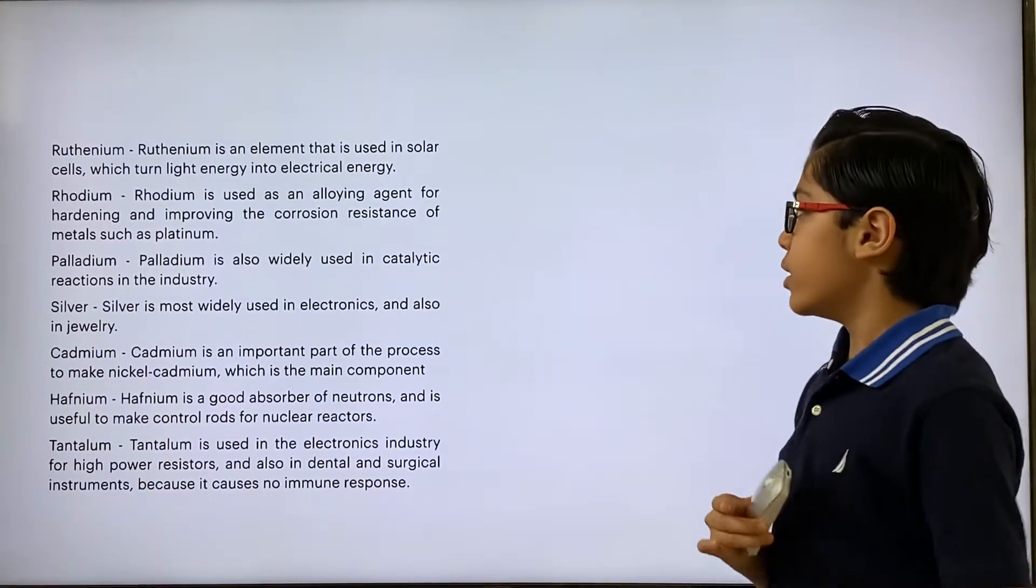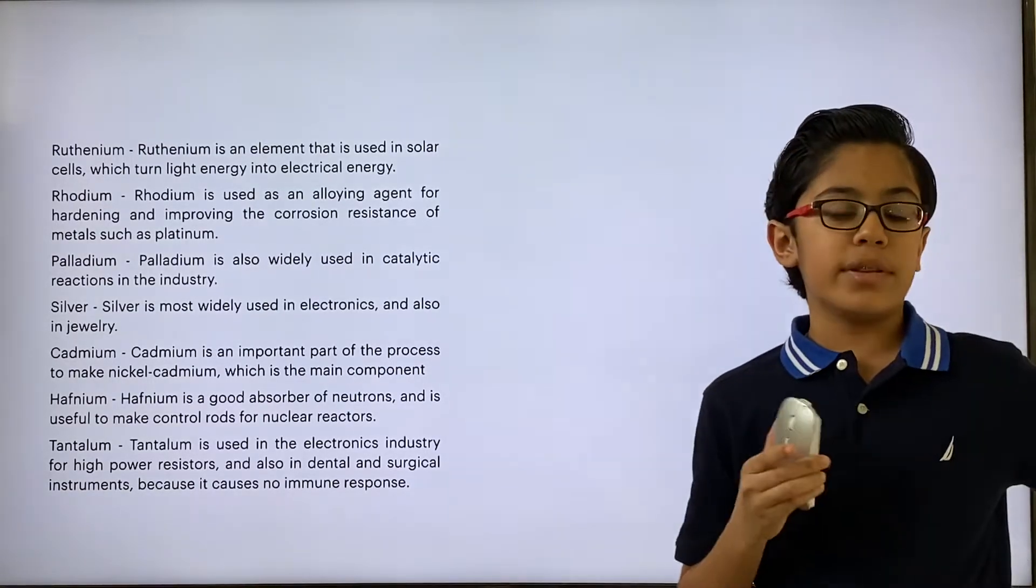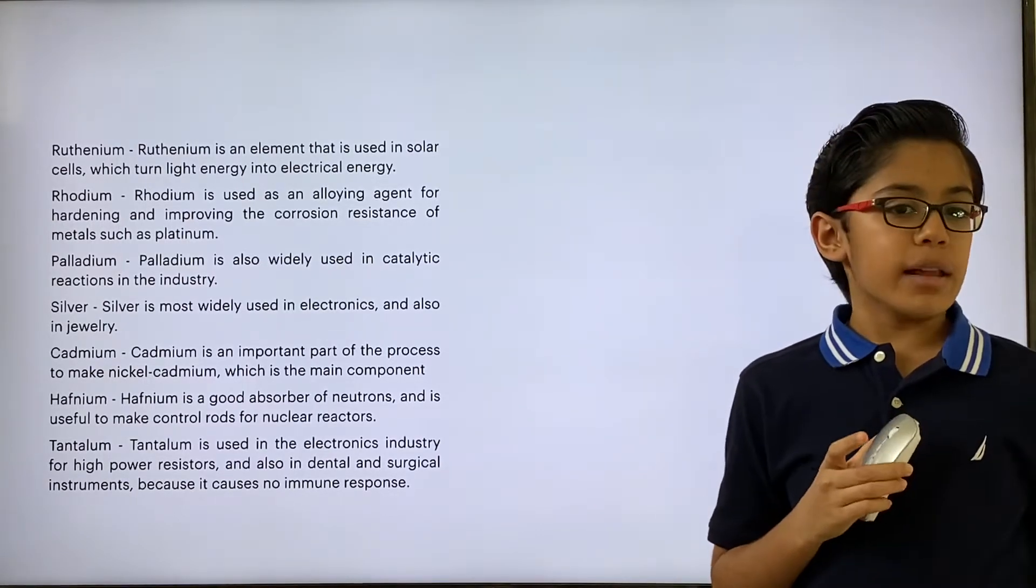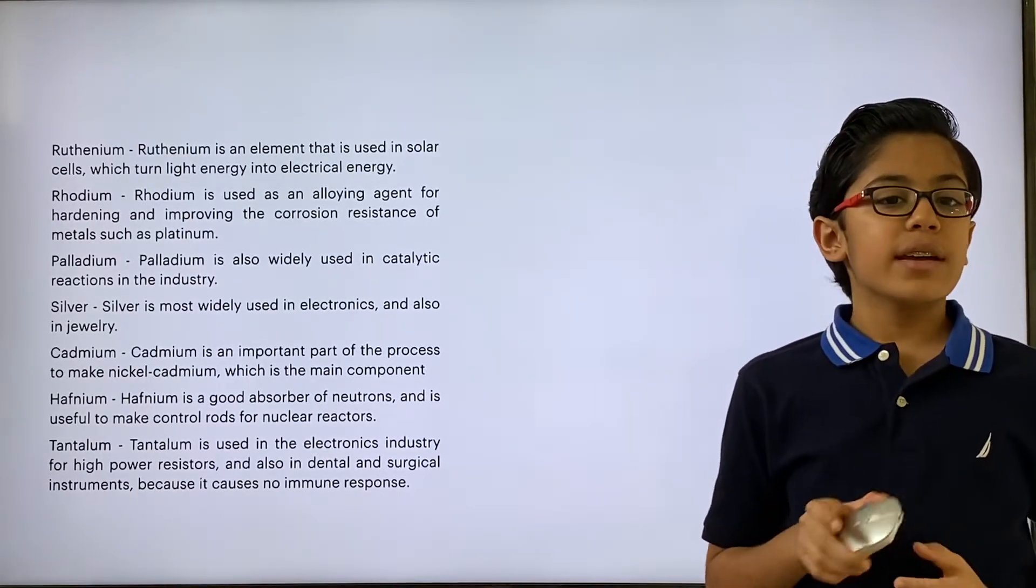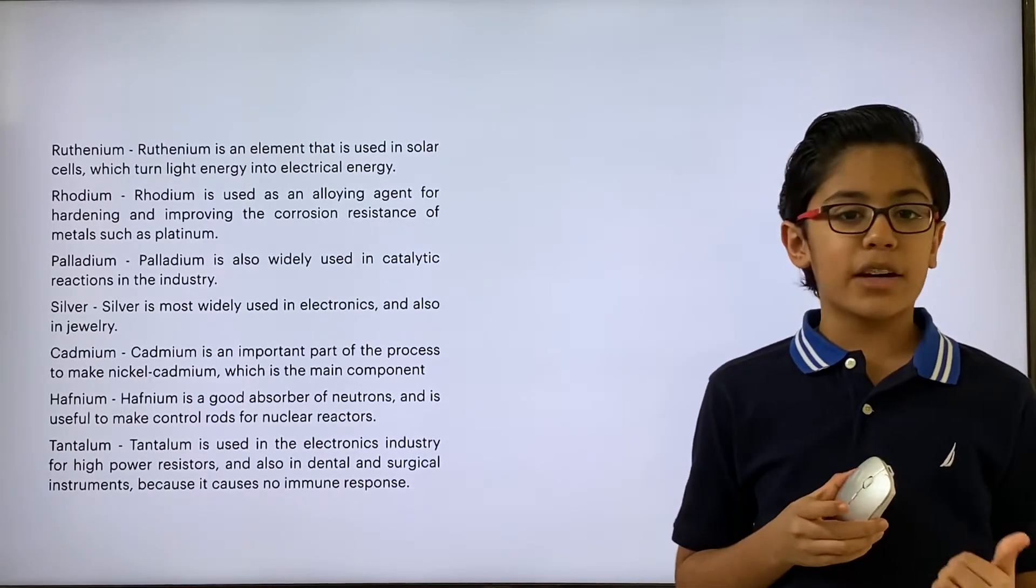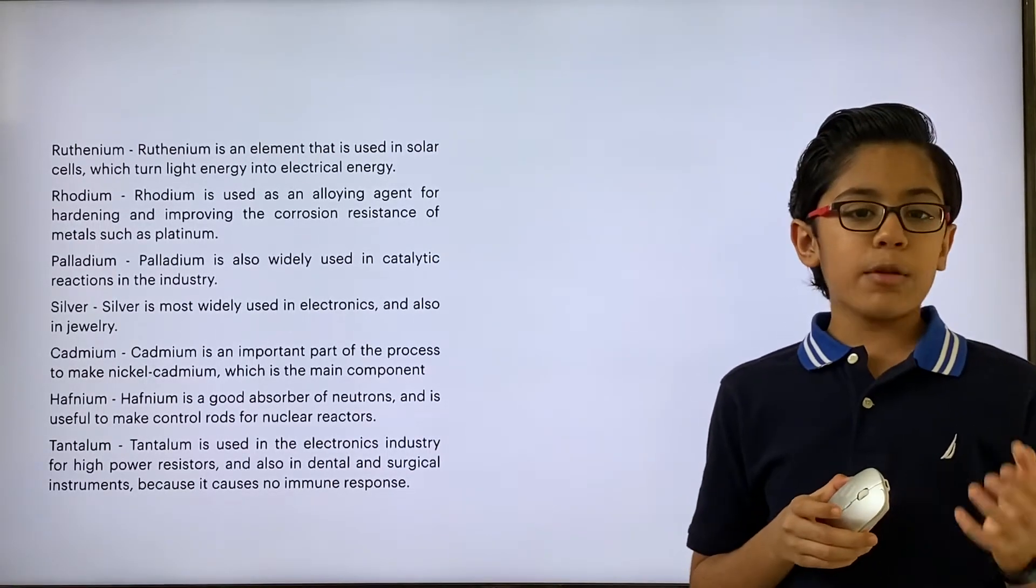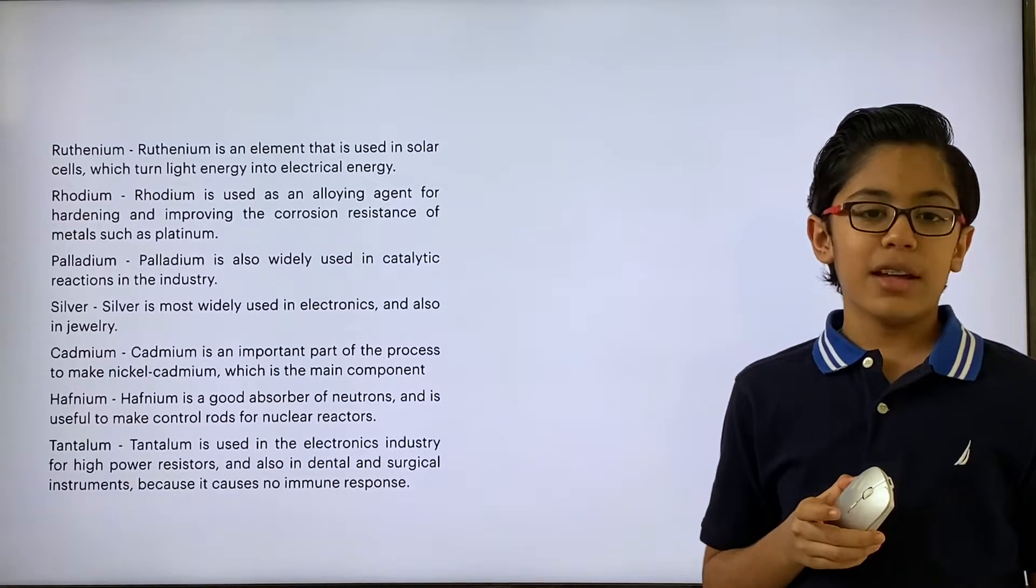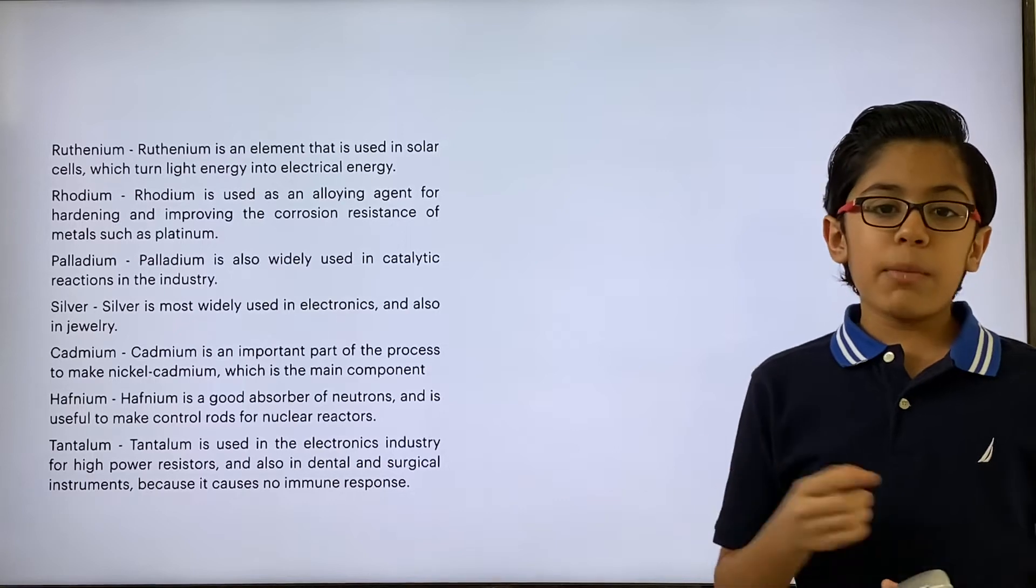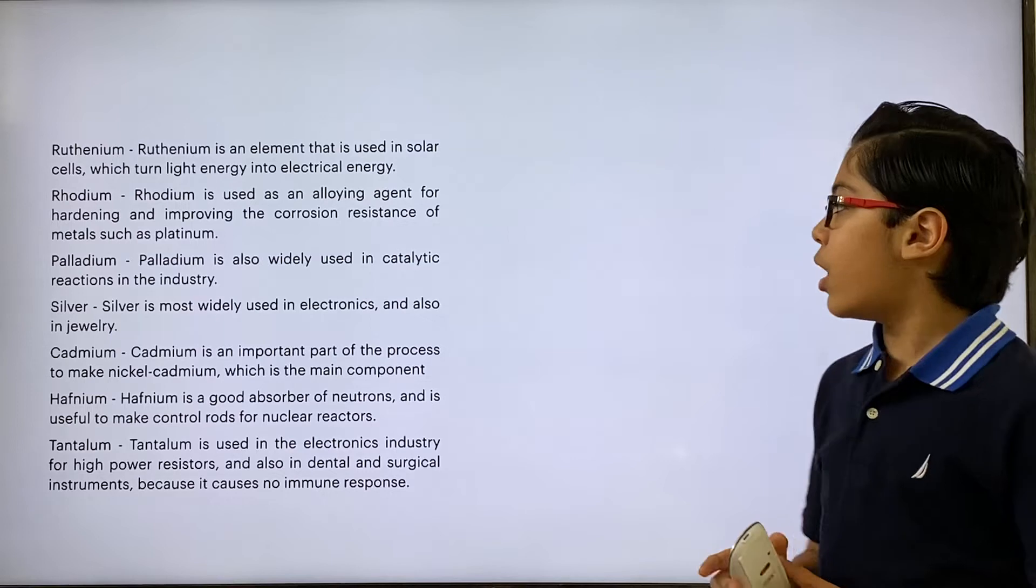Rhodium is the next one. Rhodium is used as an alloying agent for hardening and improving the corrosion resistance of metals such as platinum. Platinum is a jewelry element, but it also has uses in the construction industry and electronics. Electricity can actually corrode a metal down and make it really useless. If you were to add some rhodium to a platinum alloy, that would make it so the electricity would have a much harder time making the platinum unfit for use.